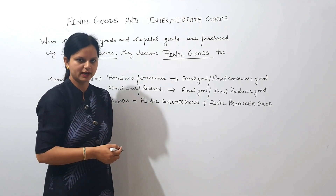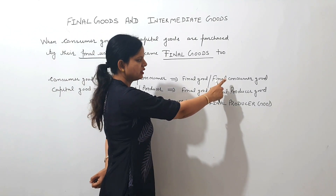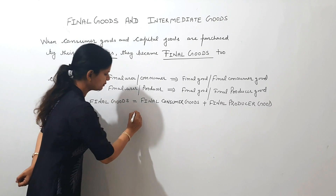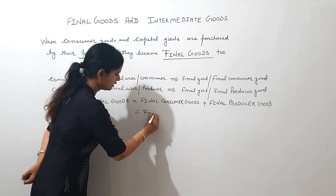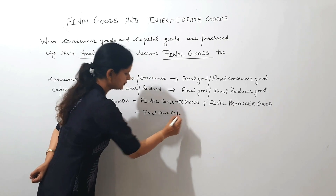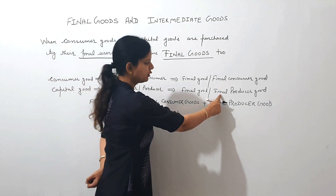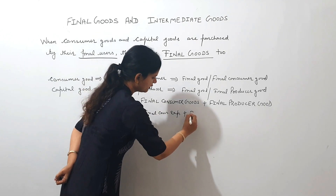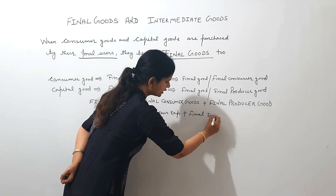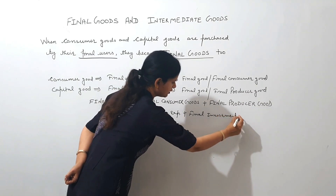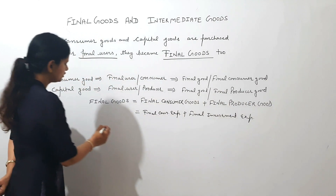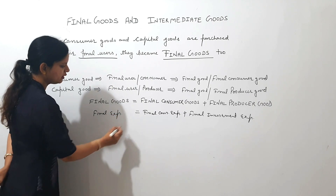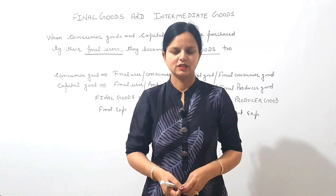Final goods are of two types: final consumer goods and final producer goods. The expenditure done on final consumer goods by its final user is called final consumption expenditure. The expenditure done on final producer goods by its final user is called final investment expenditure. So final expenditure is also of two types.